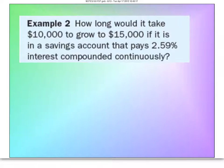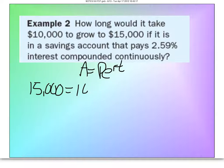Let's try this one. How long would it take $10,000 to grow to $15,000 in a savings account at 2.59% interest? Again, compounding continuously, that is the trigger for APERT. Let's just fill in what we have. Ending amount is $15,000, but we're going to start with $10,000.